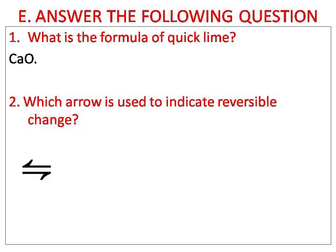Question number one: what is the formula of quicklime? Quicklime means calcium oxide, that is CaO — Ca for calcium and O for oxide. Number two: which arrow is used to indicate reversible change? The double-headed arrow is used to indicate reversible change.